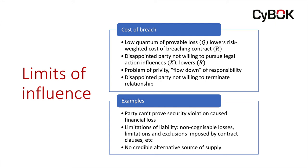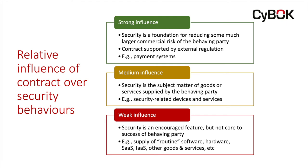Consider, for example, all the cases of breach notification — someone gets a breach notification from a given organization, three months later they're the victim of identity theft. Can they really demonstrate on the balance of probabilities that the identity theft was caused by that particular loss of data? That's going to be hard. There might also be limitations and exclusions imposed in the contract itself. Finally, in the supply chain example, it could be that a party is unwilling to pursue action because they have no credible alternative source of supply — a very common problem in outsourcing.